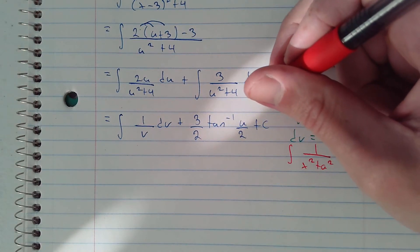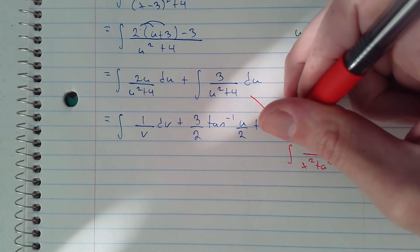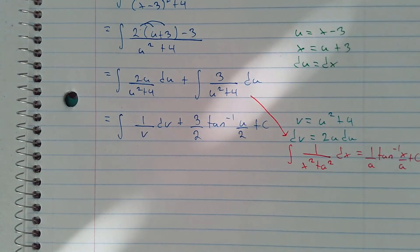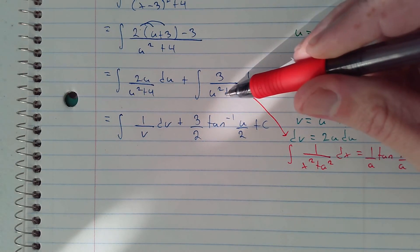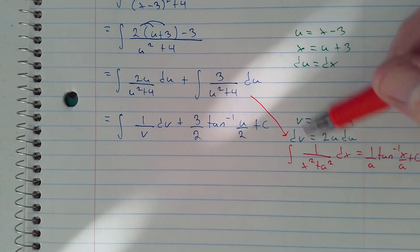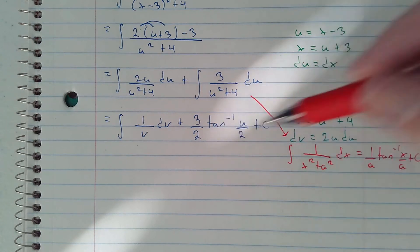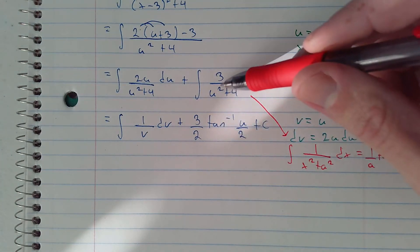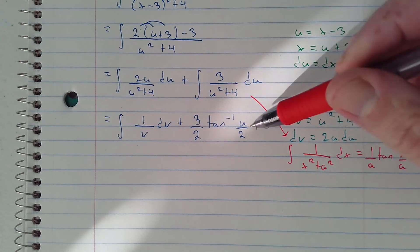That's this one here. x squared and a squared, so x squared is u squared and then a squared is 4. That means that a is 2. So we have 3 over 2, and then u over 2.